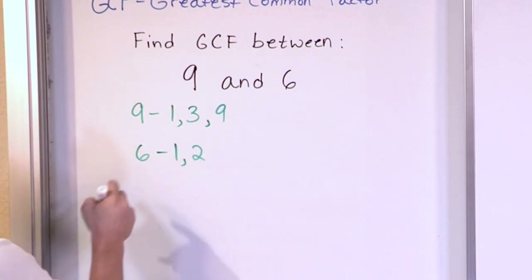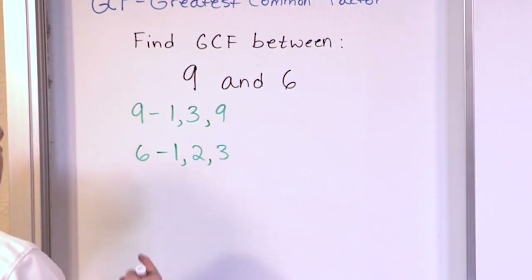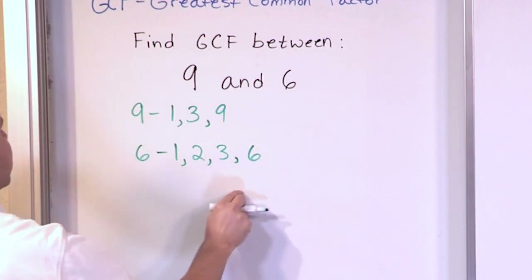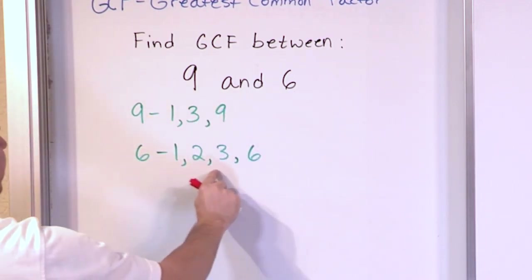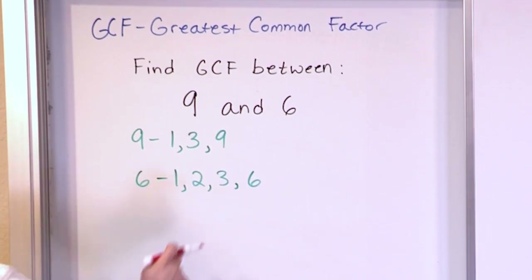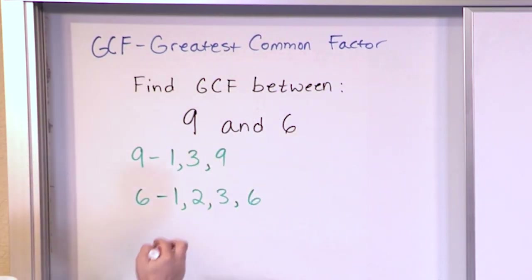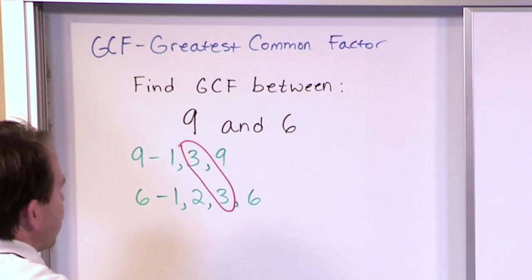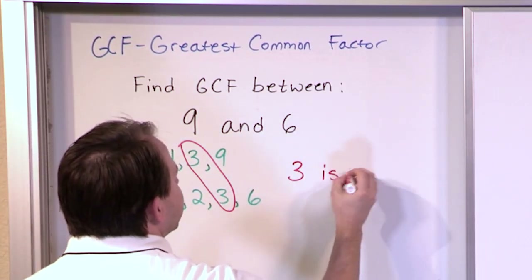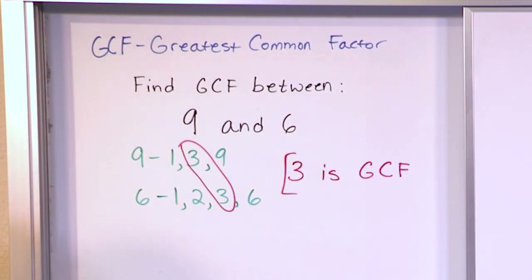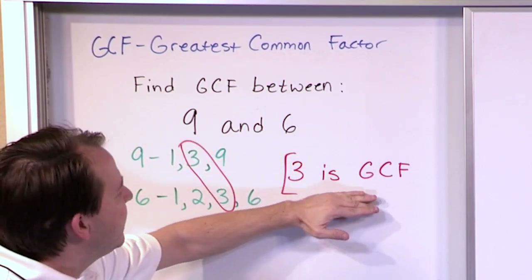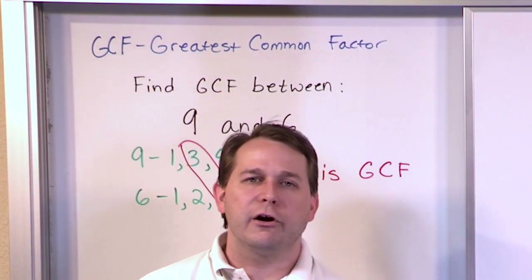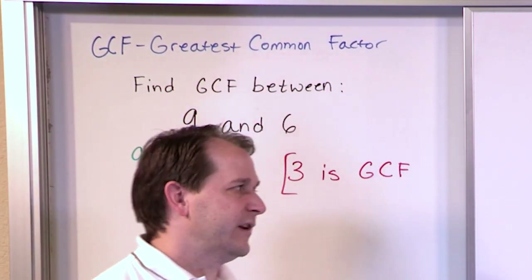1 is always a factor. 2 is a factor because 2 will divide into 6. 3 is also a factor because it will divide into 6. 4 is not a factor. 5 is not a factor. But 6 is a factor because it will divide in there evenly. So now we have two lists: the factors of 9 are 1, 3, 9; the factors of 6 are 1, 2, 3, 6. We circle the greatest one that's common to both lists — in that case, we have the number 3. So 3 is the greatest common factor.